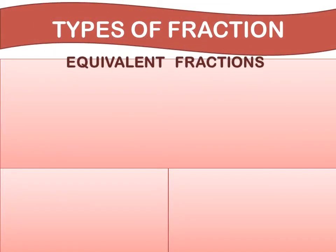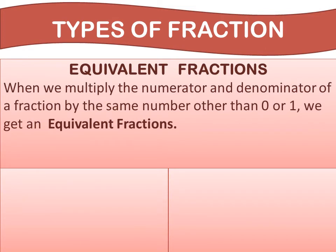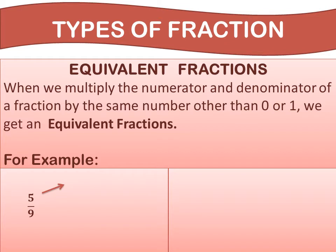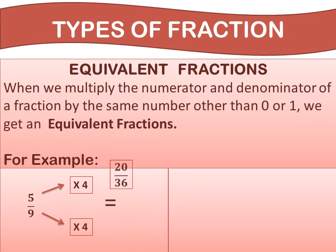Let me explain in another way. When we multiply the numerator and denominator of a fraction by the same number other than 0 or 1, we get an equivalent fraction. For example, find the equivalent fraction of 5 upon 9. To find it, we multiply the numerator and denominator by the same number. If we take 4 as a common number, we get 20 upon 36. So, 20 upon 36 is an equivalent fraction of 5 upon 9.